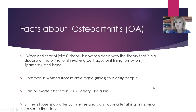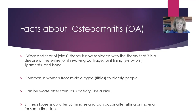Osteoarthritis — the wear-and-tear theory has been replaced with a theory about disease of the entire joint, involving the cartilage, the joint lining called the synovium, the ligaments, and the bones. They all get worn down so there's no cushioning and you have bone on bone. Osteoarthritis is more common in women, middle-aged, from the 50s to elderly. It can be worse after strenuous activity, and stiffness in osteoarthritis loosens up after about 30 minutes.